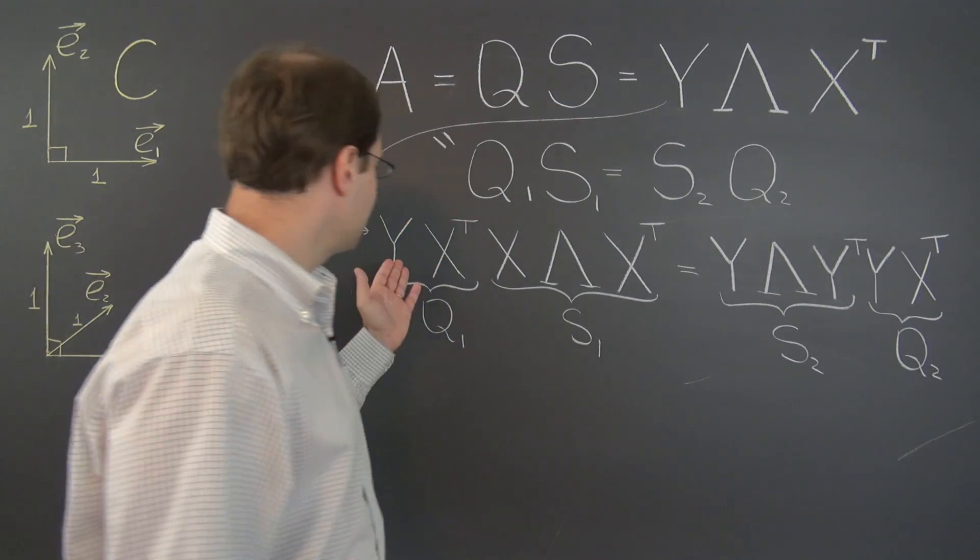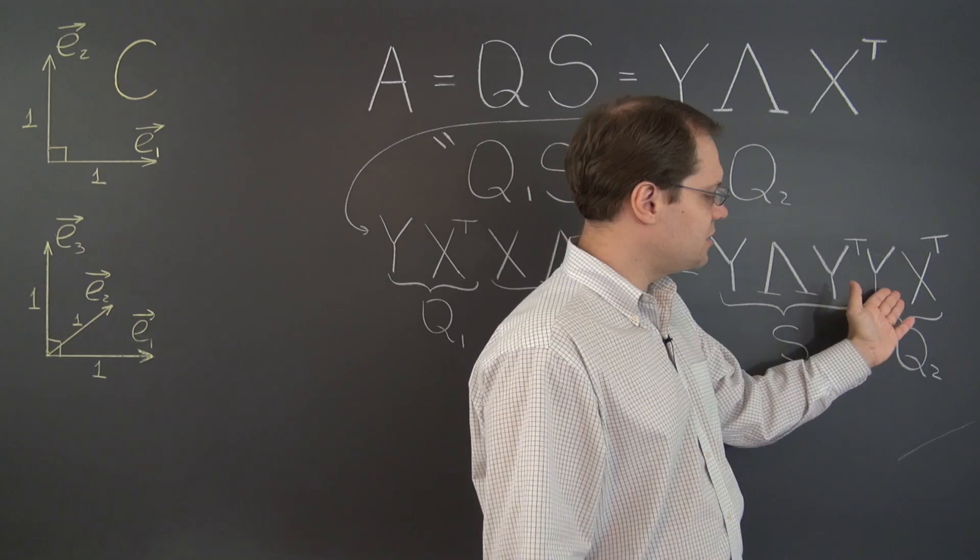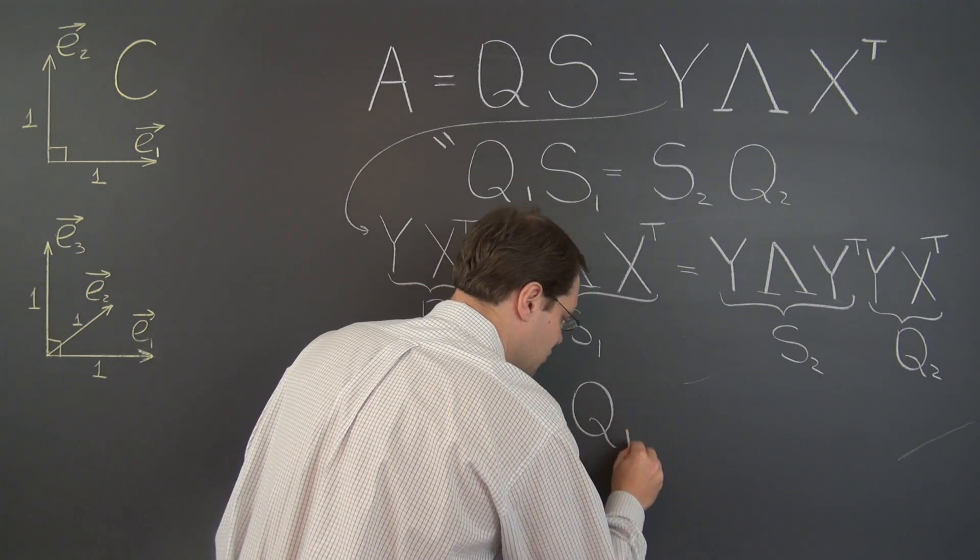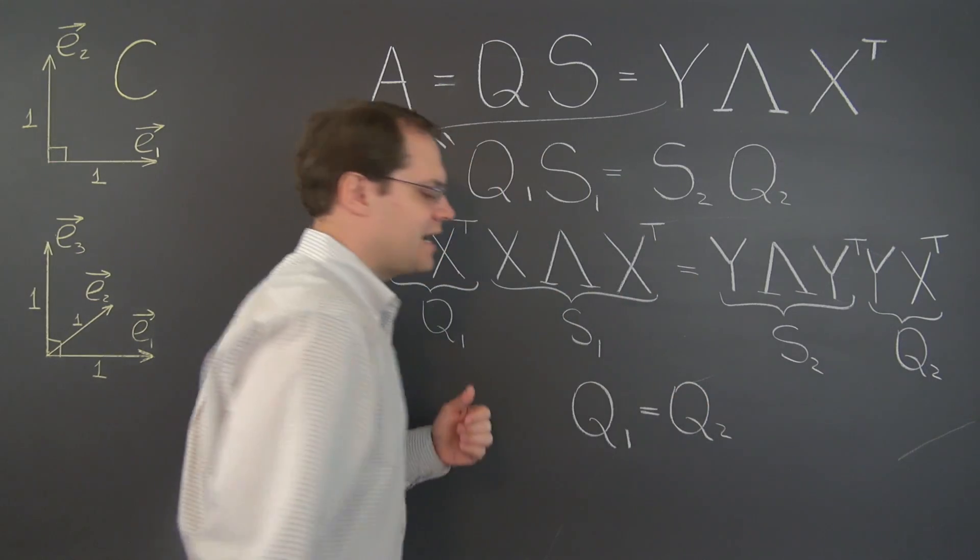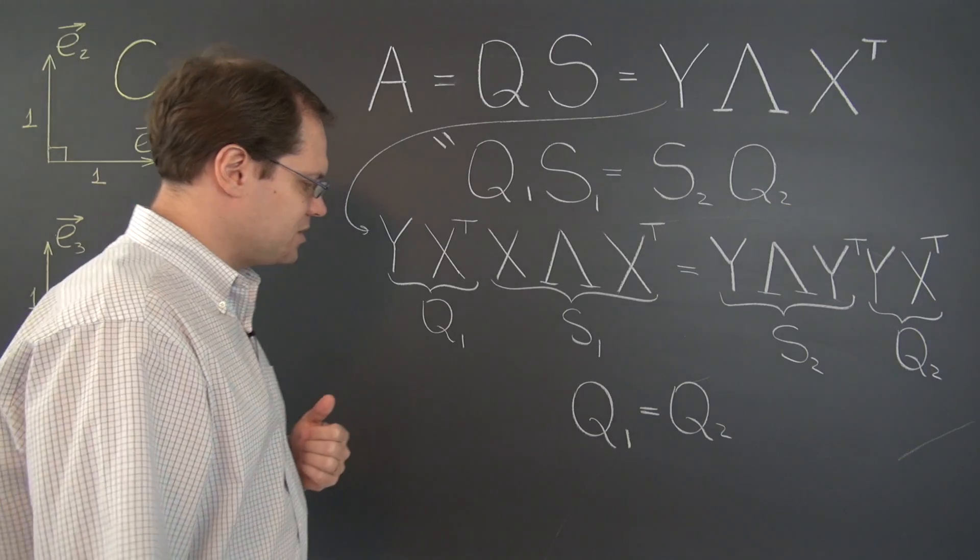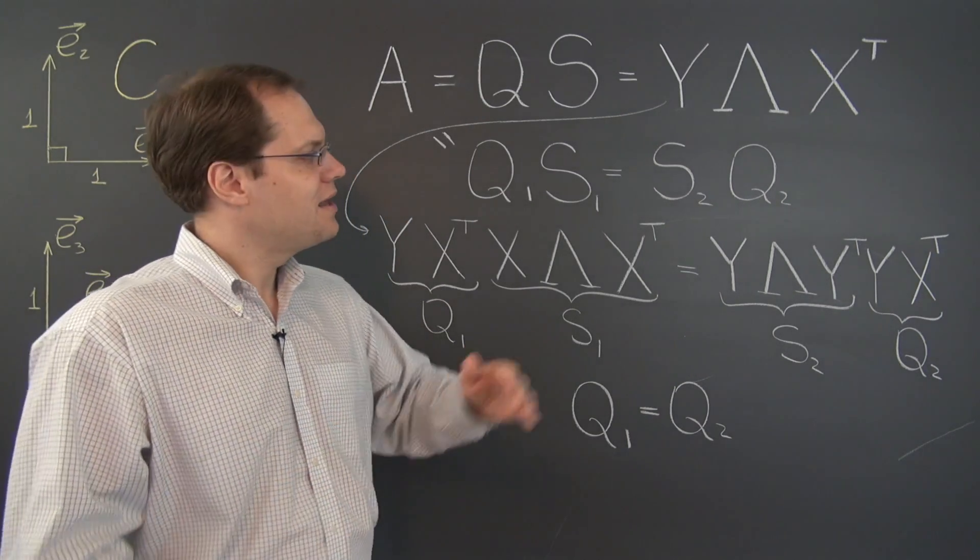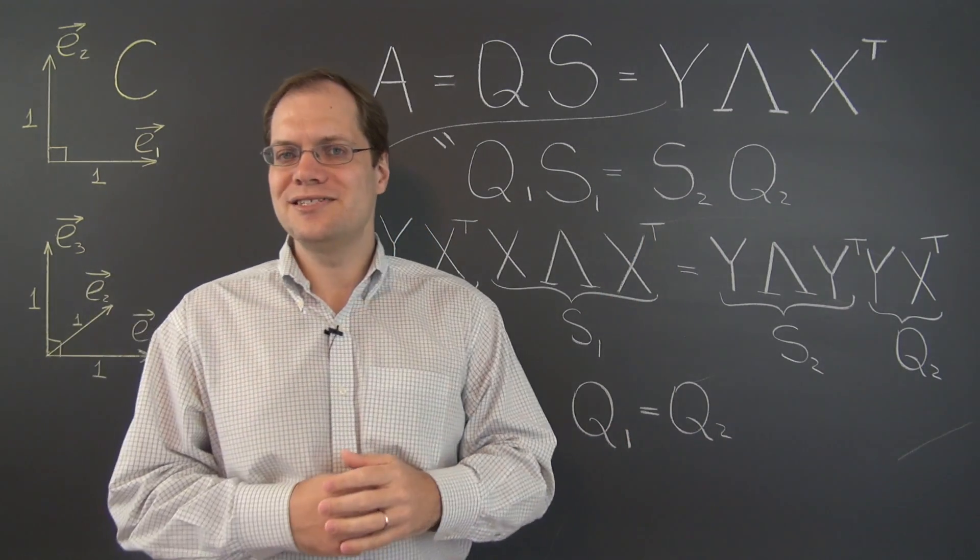So Q1 equals Y X transpose and Q2 equals Y X transpose. So our conclusion is that Q1 equals Q2. So what was unexpected and surprising when we discovered it experimentally is actually not at all surprising. And the singular value decomposition is the key to that realization.